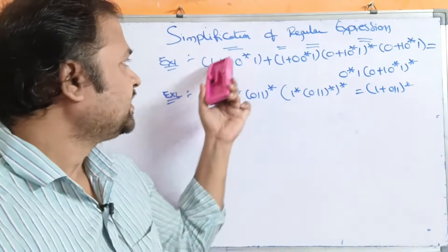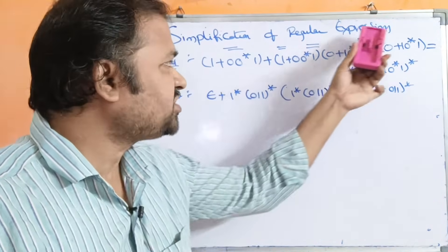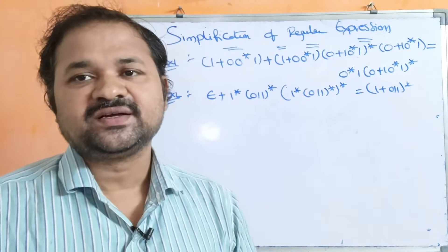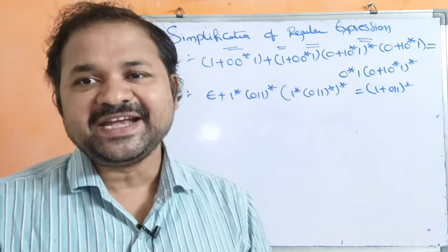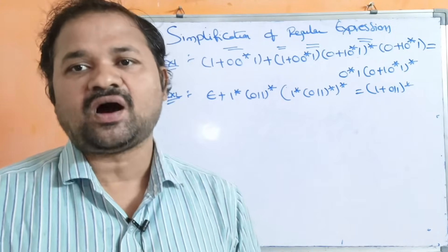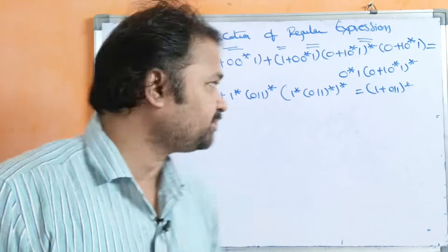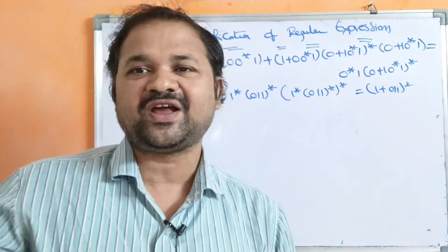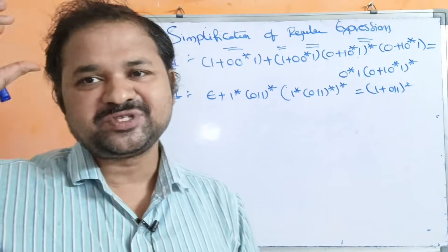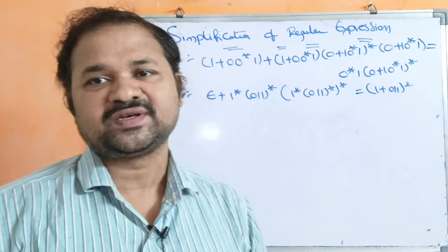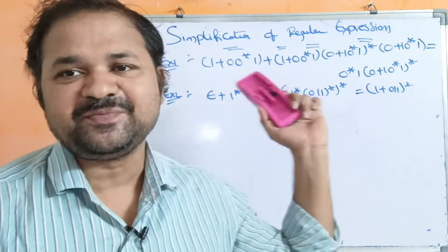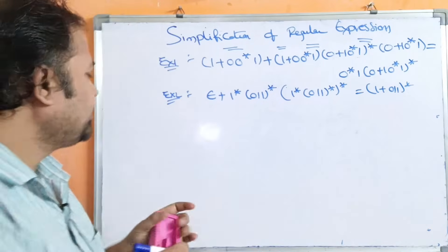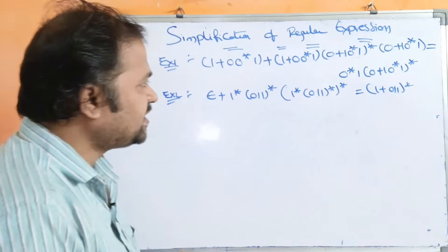Let us discuss the simplification of regular expressions by using identity rules or algebraic laws. We have a total of 12 rules, and by using those rules we have to simplify the regular expression. Here, two examples are given.